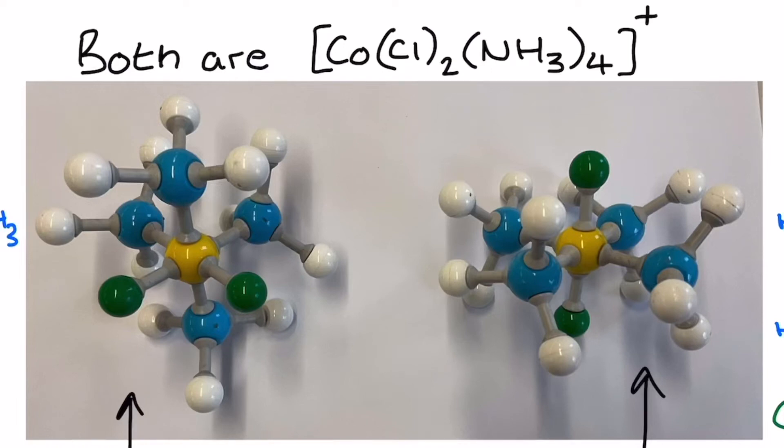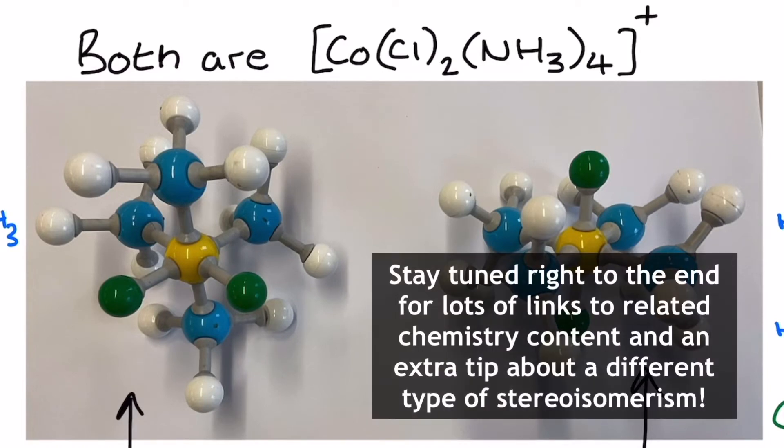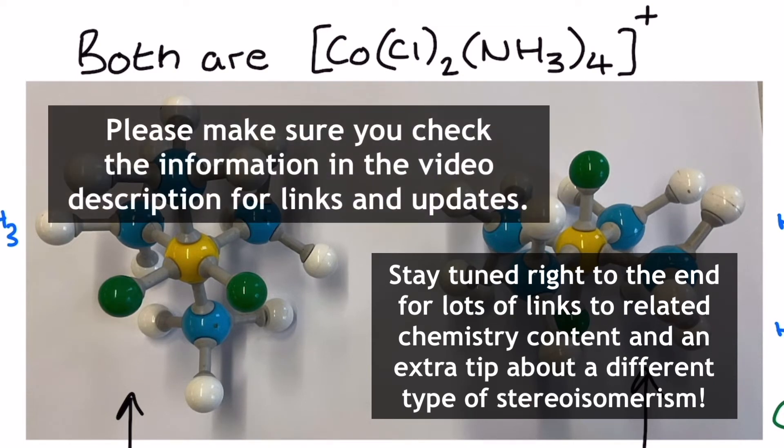Cis-trans stereoisomerism comes up in the complex ions section of your transition elements topic in your A-level chemistry. It's also mentioned in the alkenes topic when we do organic chemistry, but the rules here are a little bit different. So let's study the different types of ligand arrangement that causes cis and trans stereoisomerism in the complex ions, including when bidentate ligands are involved, because those scenarios are a little trickier to understand and interpret.